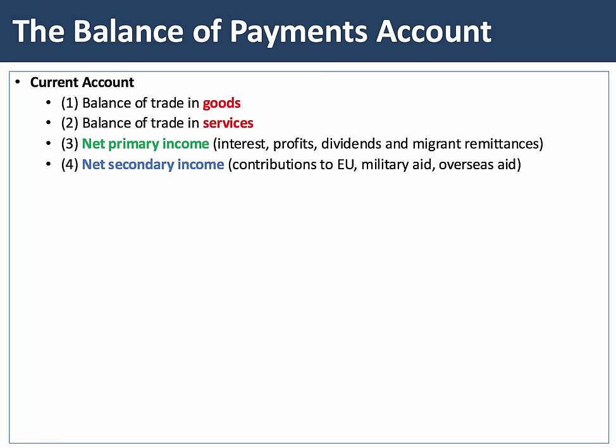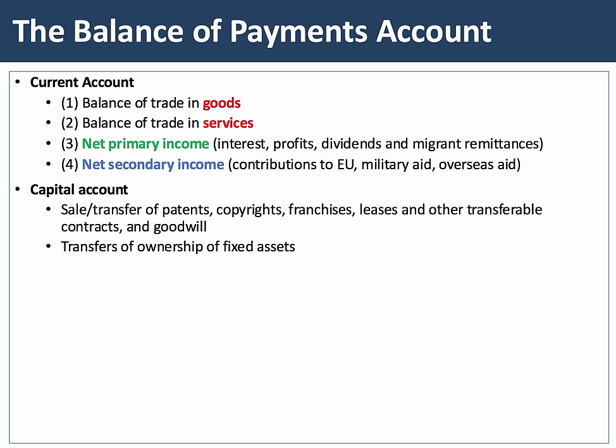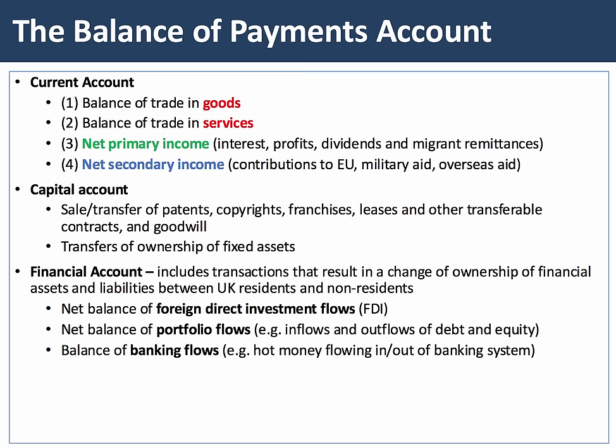Adding all four components together gives the country's current account balance. There are also a couple of items on the capital account, which basically involve the value of the sale of items such as patents, franchises, leases, and other items of capital value. But the main focus beyond the current account is the financial account.